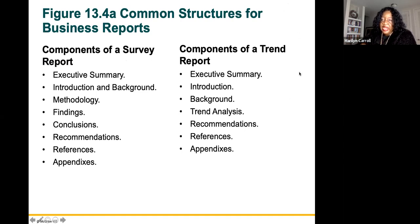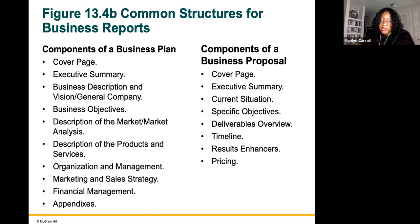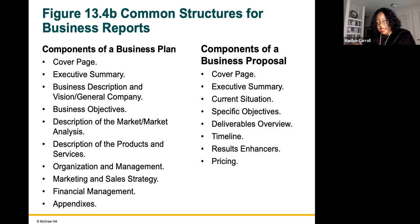A trend report includes executive summary, introduction, background, trend analysis, recommendation, references, and appendix. Components of a business plan are a cover page, executive summary, business description and vision, general company business objectives, description of the market and market analysis, description of products and services, organization and management, marketing and sales strategy, financial statements, and management appendixes. A business proposal — which is different from a business plan — has a cover page, executive summary, current situation, specific objectives, deliverables overview, timeline, results, enhancers, and pricing.